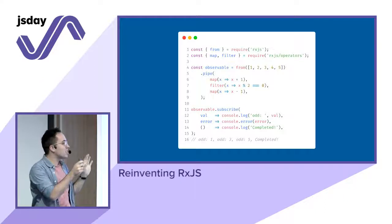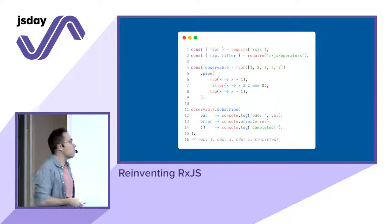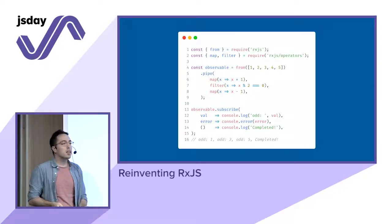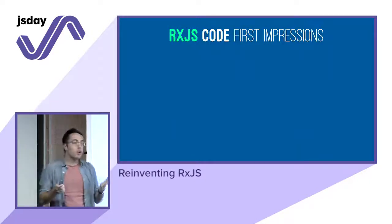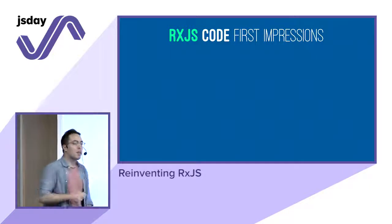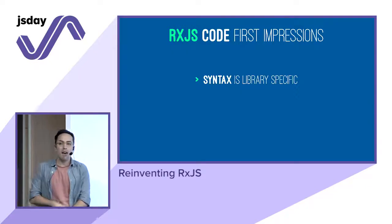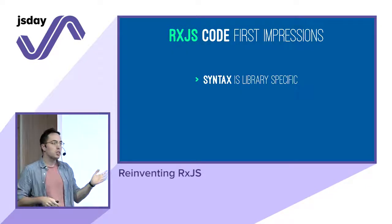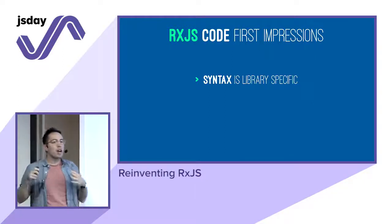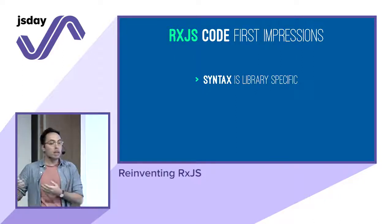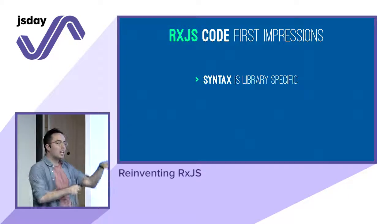The important things to grasp here are the way RxJS is assembling and forcing us to put code into a structure that sometimes could be unfamiliar, especially at the beginning. So what are the first impressions? First of all, the syntax is library-specific. It's not something you see every day, and unless you're really into functional programming and love the pipe operator or compose, those things are not super native to JavaScript itself.